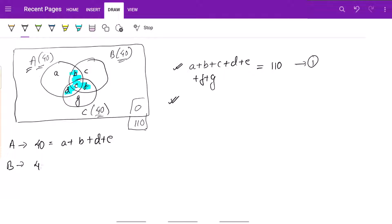For capital B, it would be 40 equals b plus e plus c plus f. And for C again, we have this e here and we have f and then we have g and d.